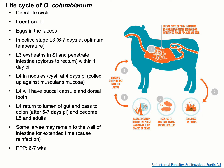Within six to seven days at optimum temperature, there will be development of L3 larvae in the environment. This L3 will migrate to the tip of the grass blade. The final host becomes infected after ingesting this L3 with the grass.